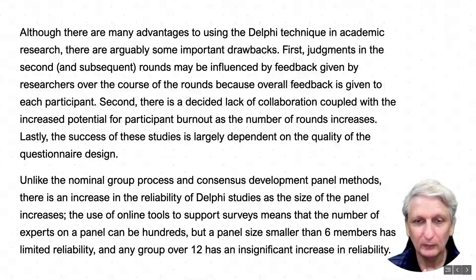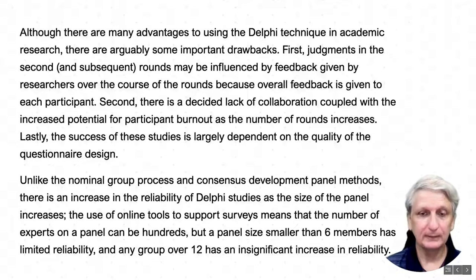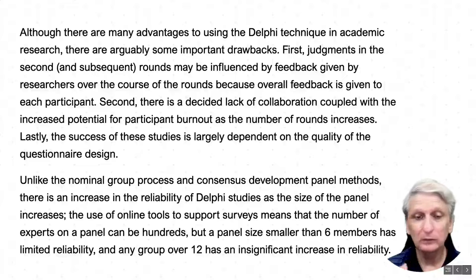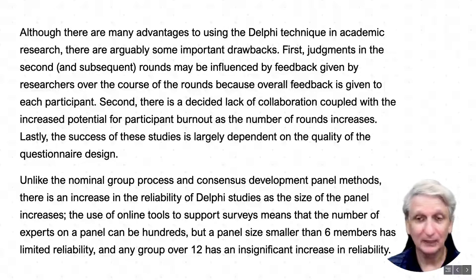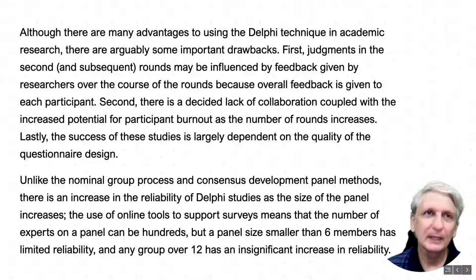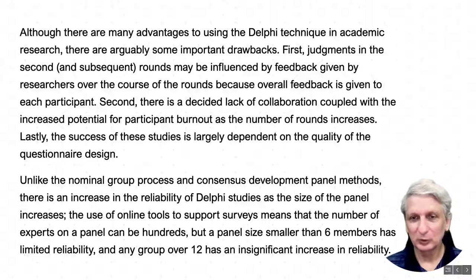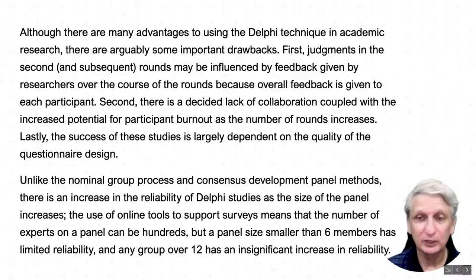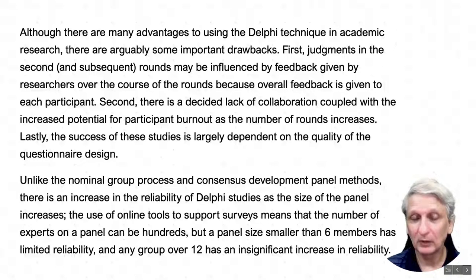A key aspect of the Delphi technique is that it is improved by having more participants. Fewer than six is considered too few, but having more than 12 is not a problem. Research has shown that once you have around 10 to 12 experts, adding more doesn't necessarily introduce many new ideas — the main options around a particular topic will already have been covered within that range. Notably, you can have hundreds of participants in a Delphi process without significantly affecting its complexity or difficulty.